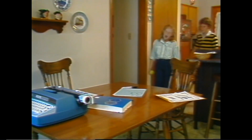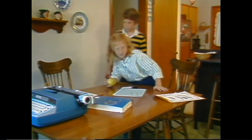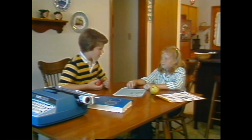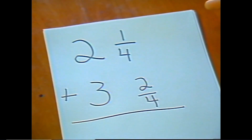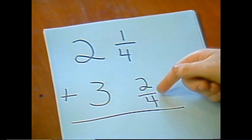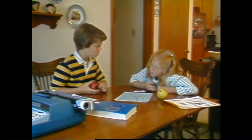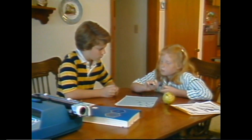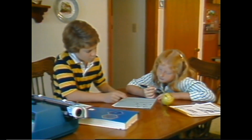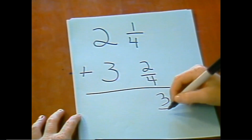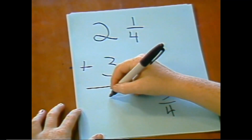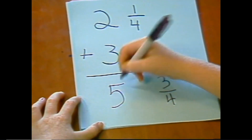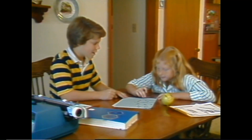Jennifer suggests adding the whole numbers first. Robert points out that with whole numbers they'd add the ones column first. Since the denominators are the same, they add the numerators: one-fourth plus two-fourths equals three-fourths. Then two plus three equals five. So the answer to part one is five and three-fourths waffles.